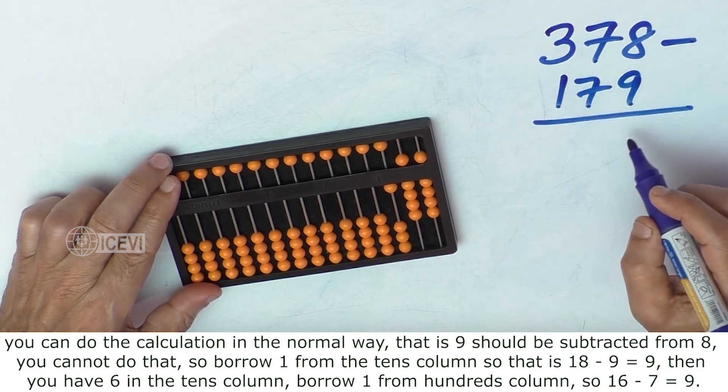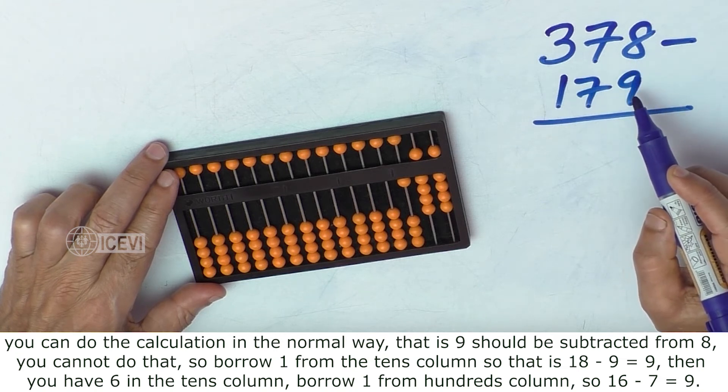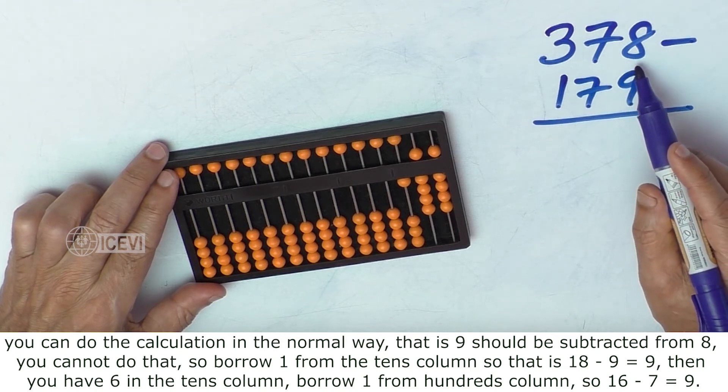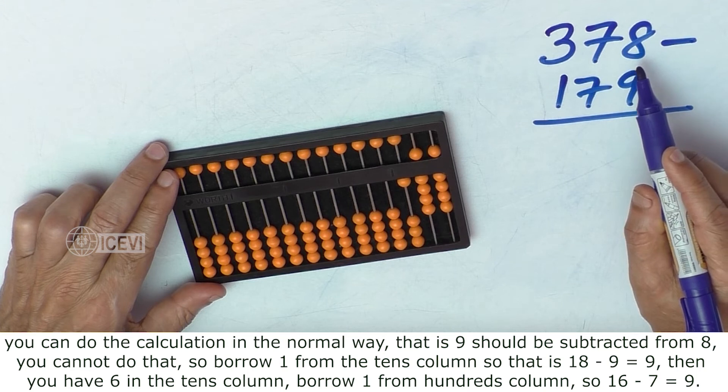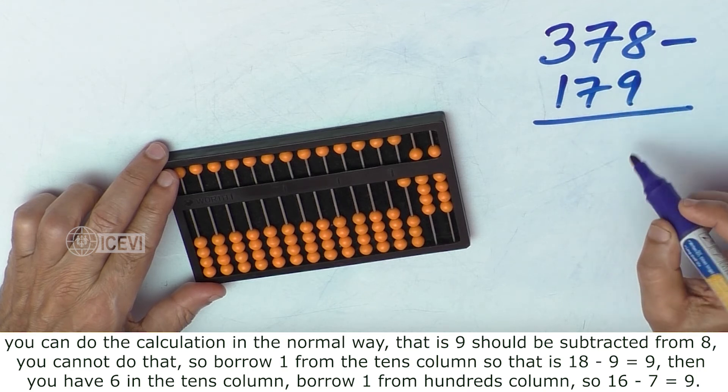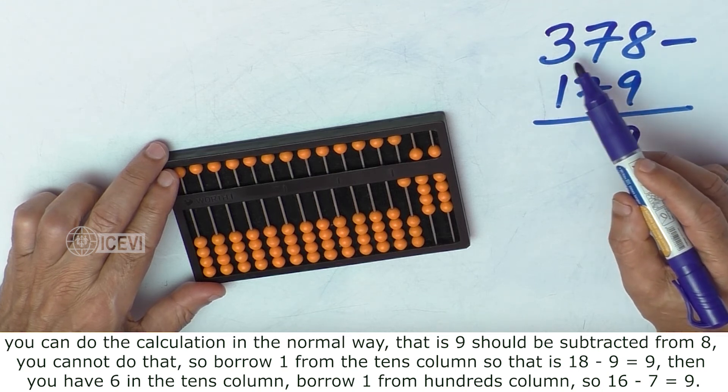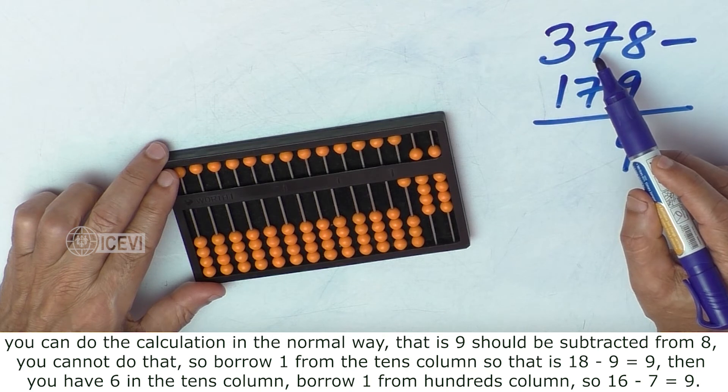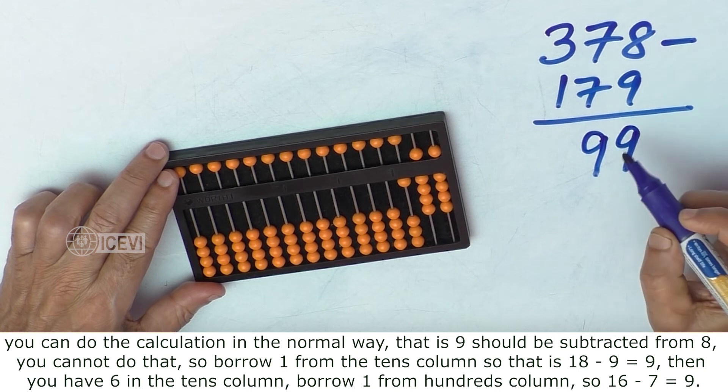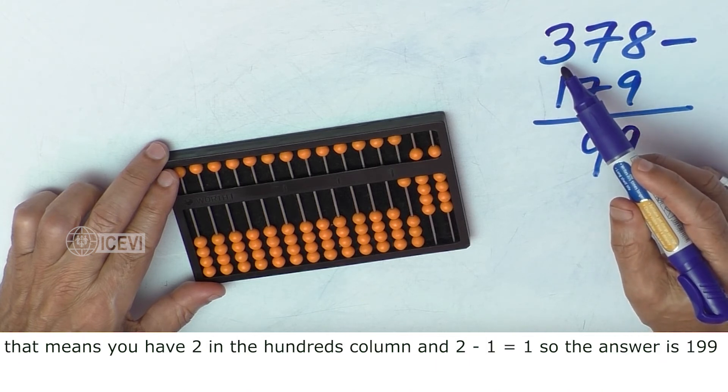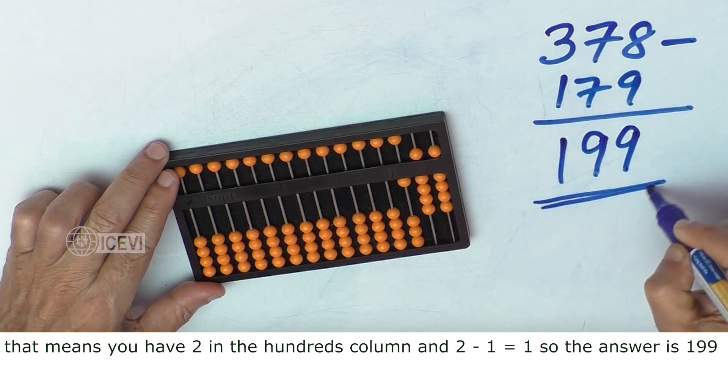And you can do the calculation in the normal way. That is 8 and 9—9 should be subtracted from 8. You cannot do that, so borrow 1 from the tens column, so that means 18 minus 9, that is 9. Then you have 6 in the tens column. Borrow 1 from the hundreds column. 7 subtracted from 16, it is 9. That means you have 2 in the hundreds column, and 2 minus 1 becomes 1. It is 199.